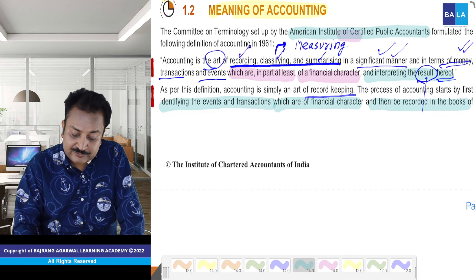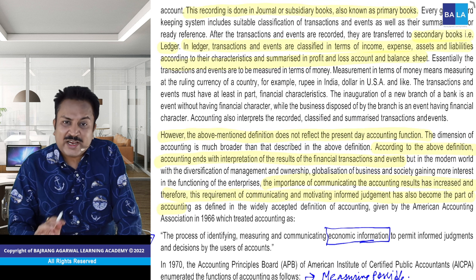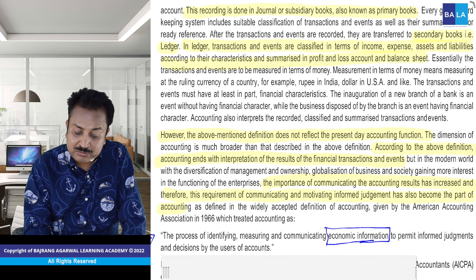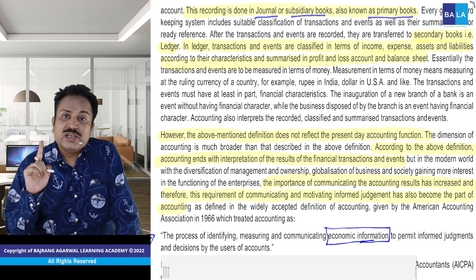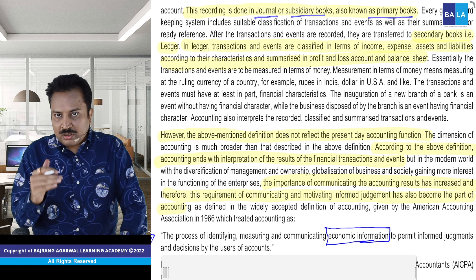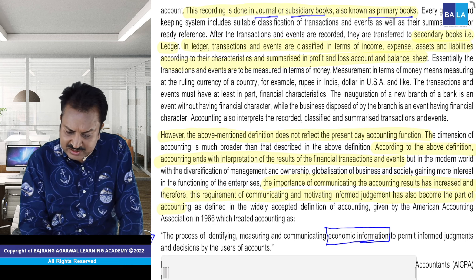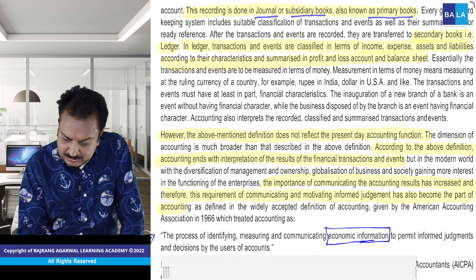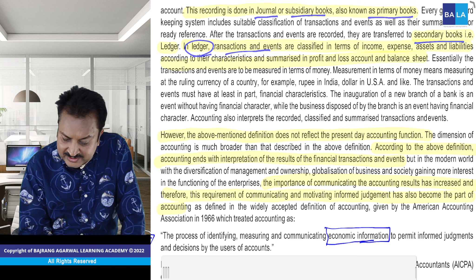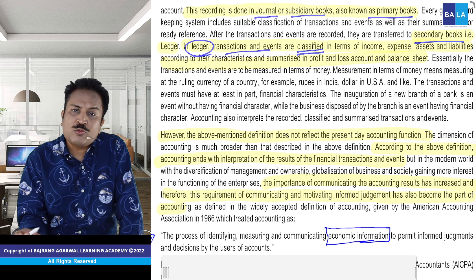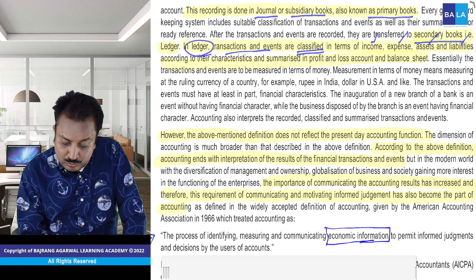And then the recorded in the books of account. Ab maine kuch yellow mein highlight kar rakha — main sirf woh lines padh raha hoon jisse aapka time bache. Recording jo hai, woh journal book mein karte hain, ya subsidiary books mein karte hain — aur inhe hum kehte hain primary books. Yeh sab maine aapko lecture one mein padhaaya tha. Primary books mein hum record karte hain, uske baad hum secondary books mein pahunchte hain — secondary books ko hum ledger kehte hain. Yahaan par transaction and events ko hum classify karte hain.